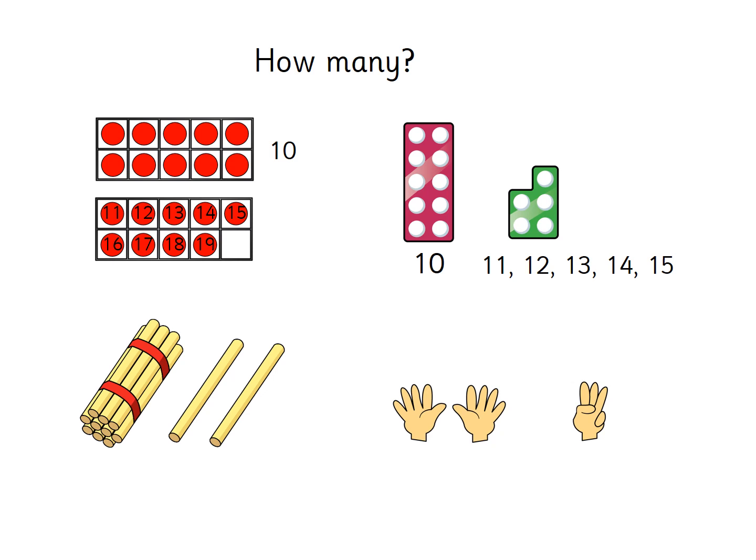We've got the straws on the bottom left — base 10. We've got a pack of 10 in that red tape, and then 2 on the outside, so 10, 11, 12. We don't need to count all of those in the packet — we know it represents 10. And we've got some hands: both hands up makes 10, so we count on from 10, and there are also three fingers up — 10, 11, 12, 13. So 10 and 3 is 13.